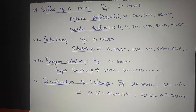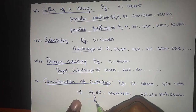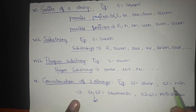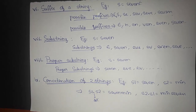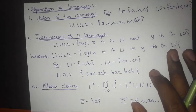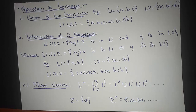What is the concatenation of two strings? Concatenation is denoted by the dot operator and is nothing but the joining of two strings together. It can be done in either way.